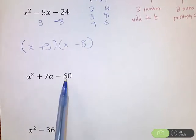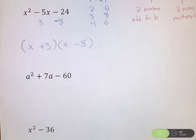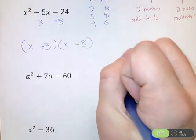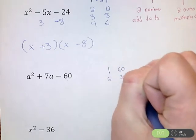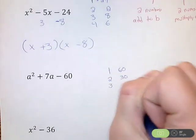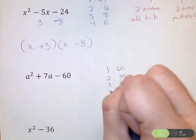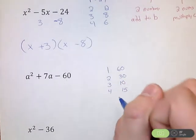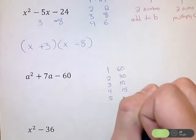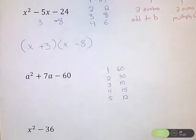And see if I can find if one of those pairs will get me to 7. So I'm thinking 1 and 60, 2 times 30 gets me 60, 3 times 10 gets me 60, 4 times 15 gets me 60, 5 and 12 gets me 60, 6 and 10 also get me 60.